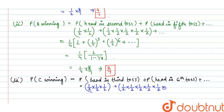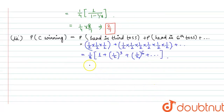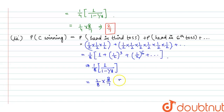Taking (1/8) as common, we get (1/8) × [1 + (1/2)^3 + (1/2)^6 + ...]. Applying the GP formula: (1/8) × (1 / (1 - 1/8)) = (1/8) × (8/7) = 1/7. So the probability of C winning is 1/7. This completes the solution.